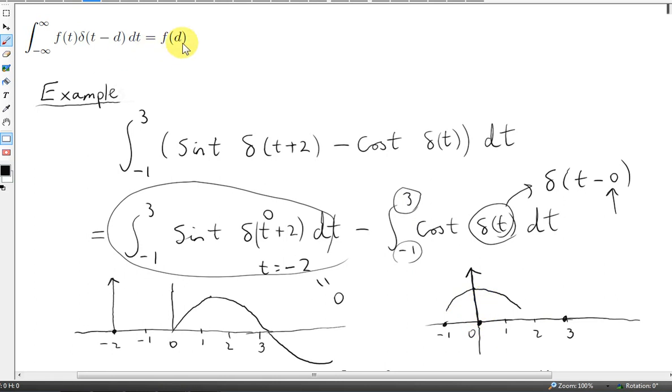So we can apply this rule up here, which tells us that the result will be f(d). Or f in this case is cos of t, and d in this case is 0. So we are going to get the cos of 0, which is 1. So this integral picks out the value of the function at t equals 0.